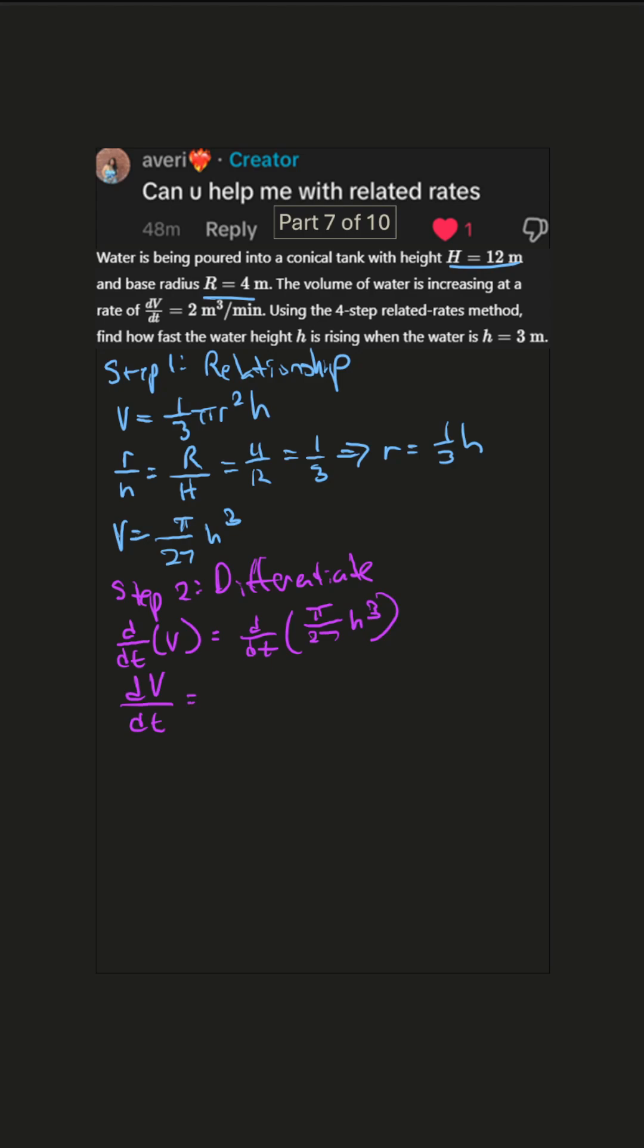Right hand side we can pull out the constants, that's π/27, and then take power rule, so we get 3h², and then chain rule, dh/dt. Wonderful. And we can simplify that. So that equals π/9 h² dh/dt.